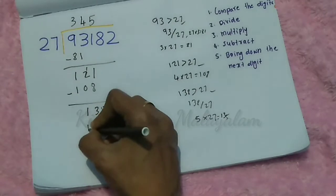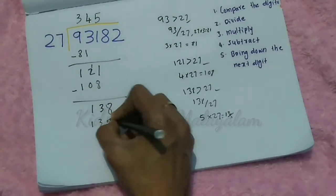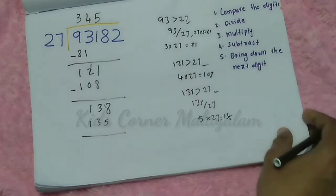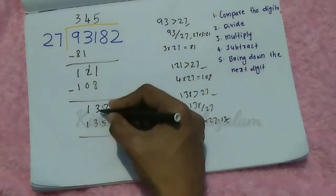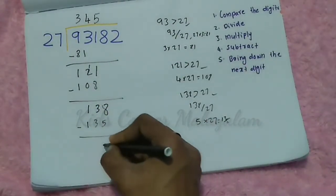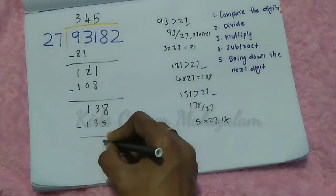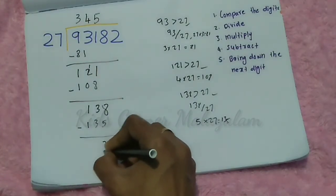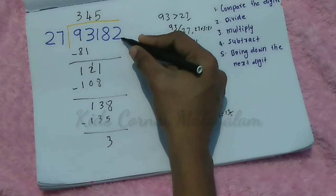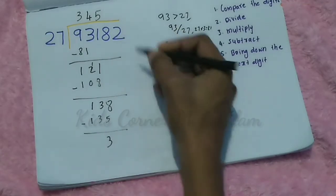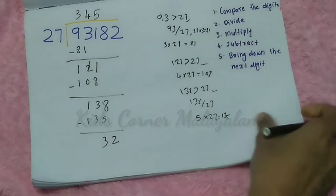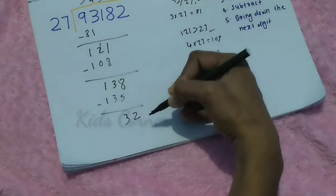The next step is subtraction: 138 minus 135 equals 3. Now bring down the last digit, which is 2, so we have 32.